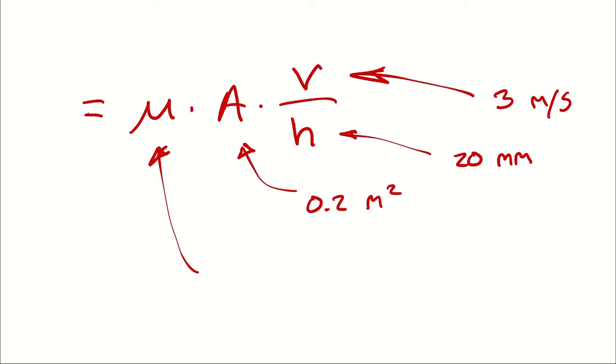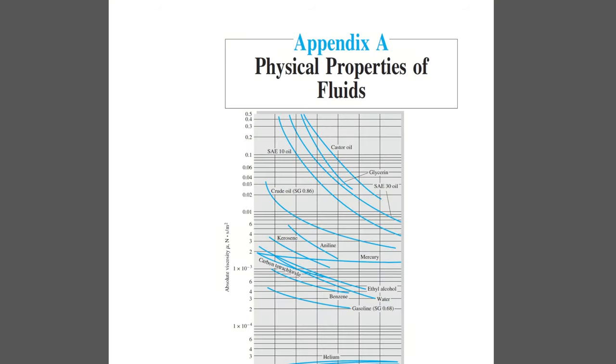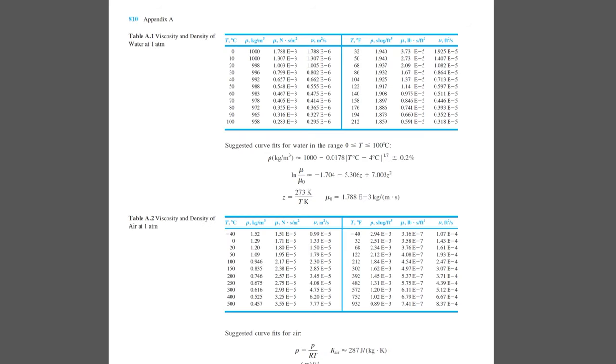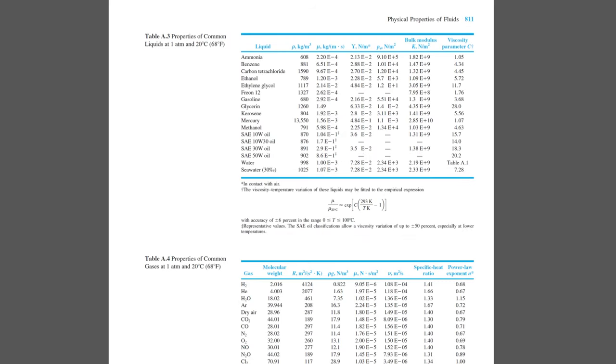And for that, we are going to go into our appendices. So we want table A3, which is going to have properties of some common liquids at 20 degrees Celsius, conveniently. And for SAE 30-weight oil, the dynamic viscosity is 2.9 times 10 to the negative first kilograms per meter second.